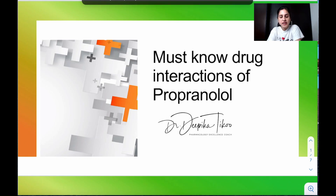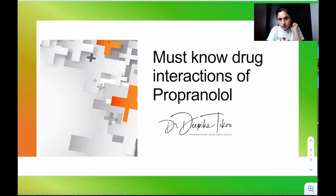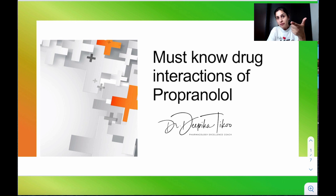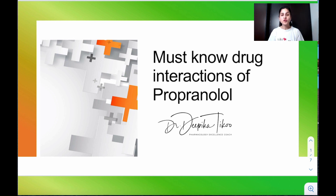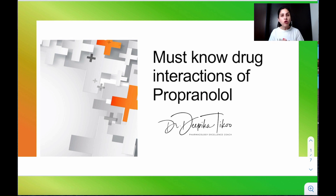It so happens with students that whenever they're reading about beta blockers, they pay attention to the mechanism, they pay attention to the uses, some of them do pay attention to the adverse effects and contraindications as well, but when it comes to drug interactions, very few students actually pay attention. They miss out on the importance of drug interactions of beta blockers. Drug interactions are not important for all drugs, but for this particular drug group it is so commonly used.